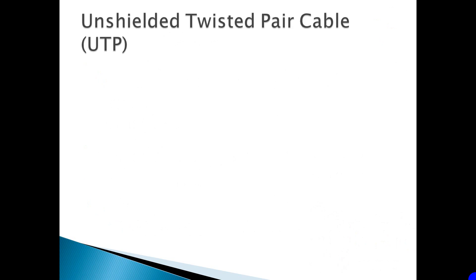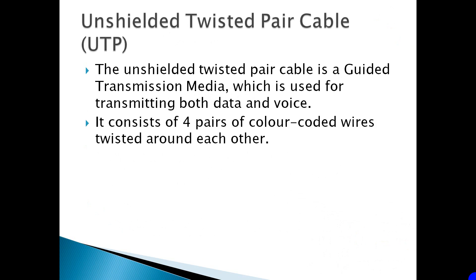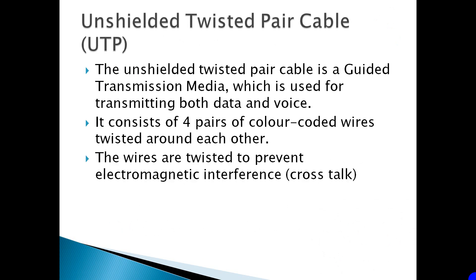The unshielded twisted pair cable is a guided transmission media which is used for transmitting both data and voice. It consists of four pairs of color-coded wires which are twisted around each other. The wires are twisted to prevent electromagnetic interference, i.e. cross-talk.